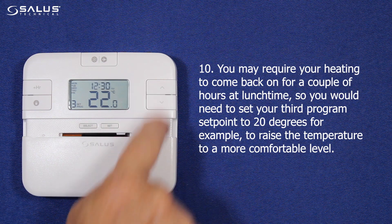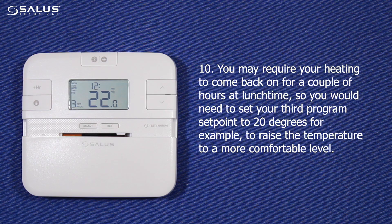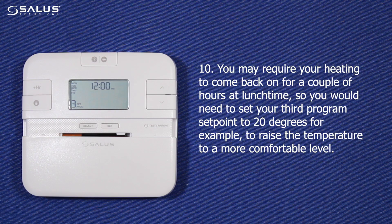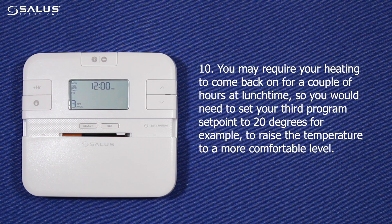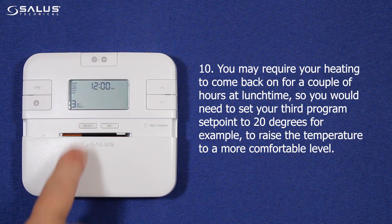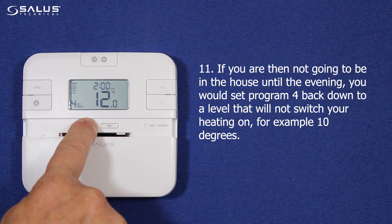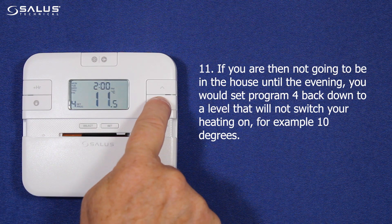Step 10: You may require your heating to come back on for a couple of hours at lunch time. So you would need to set your third program set point to 20 degrees, for example, to raise the temperature to a more comfortable level. Step 11: If you are not going to be in the house until the evening, you would set program 4 back down to a level that will not switch your heating on, for example 10 degrees.